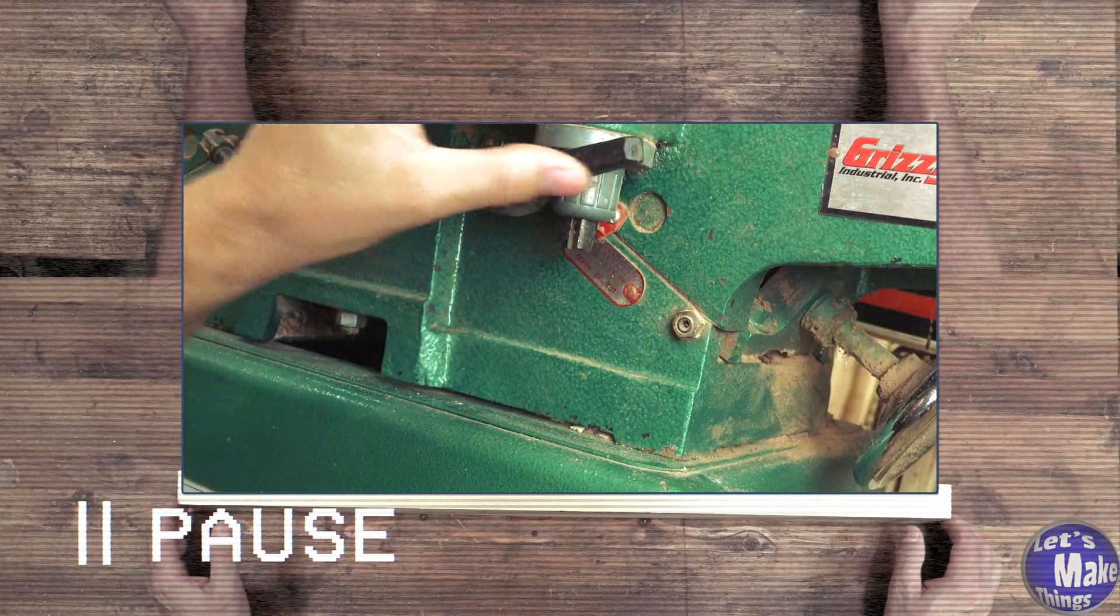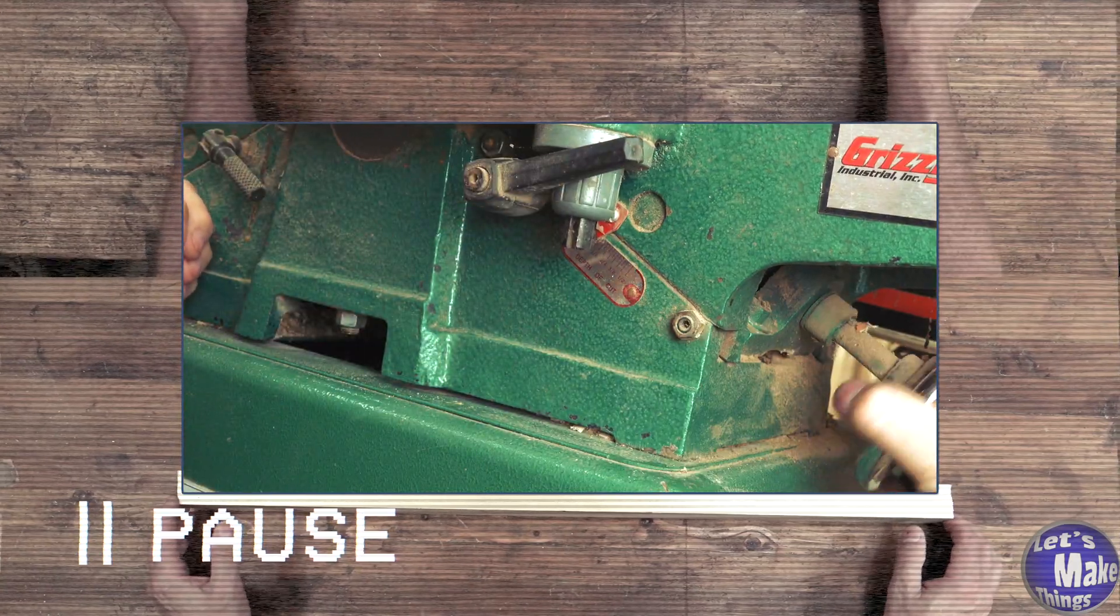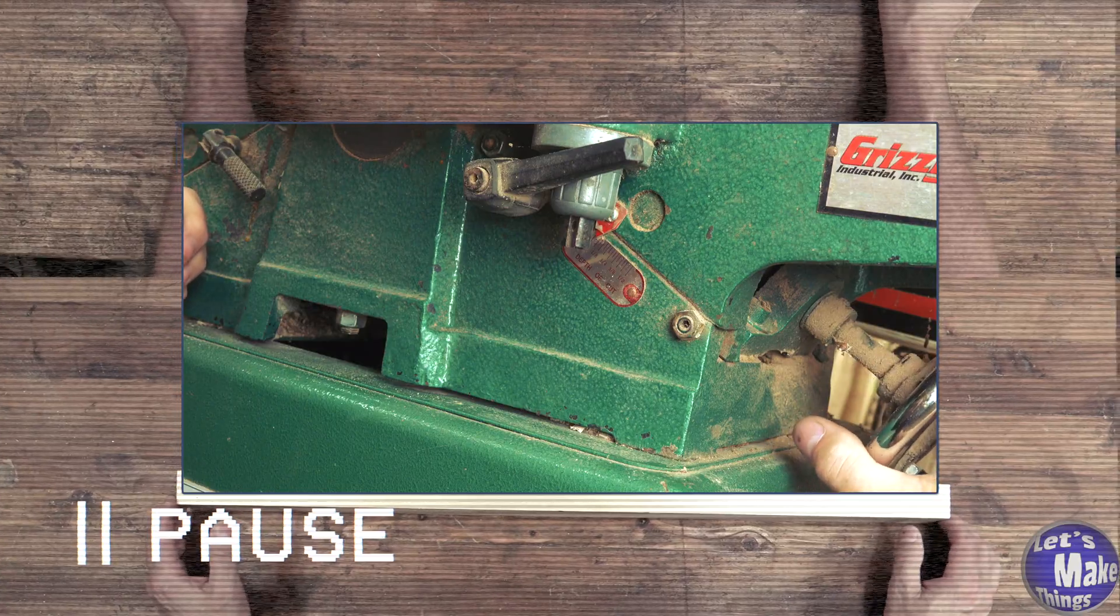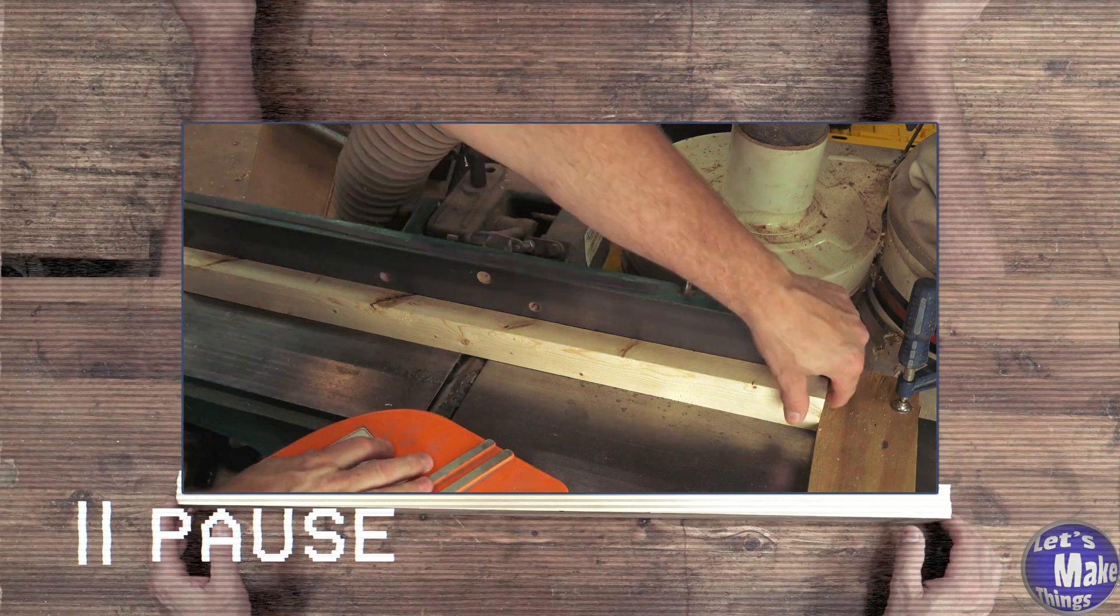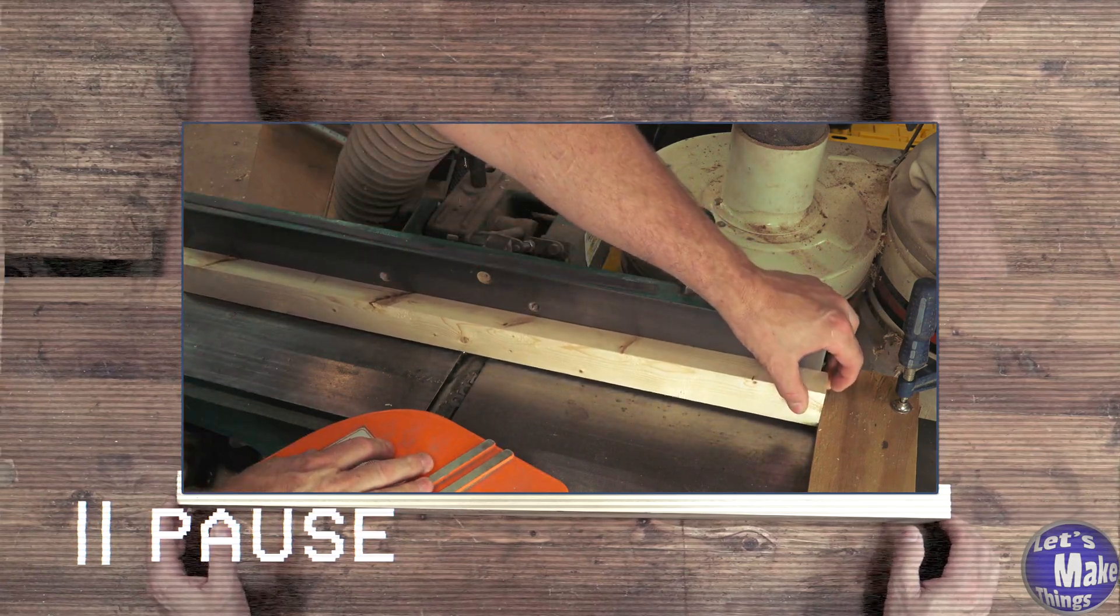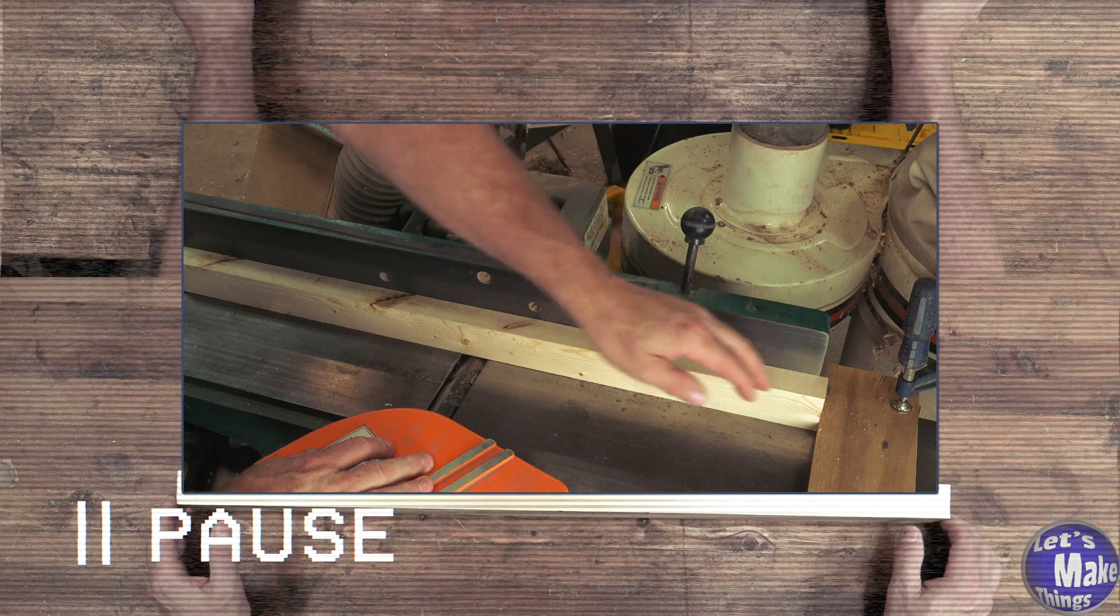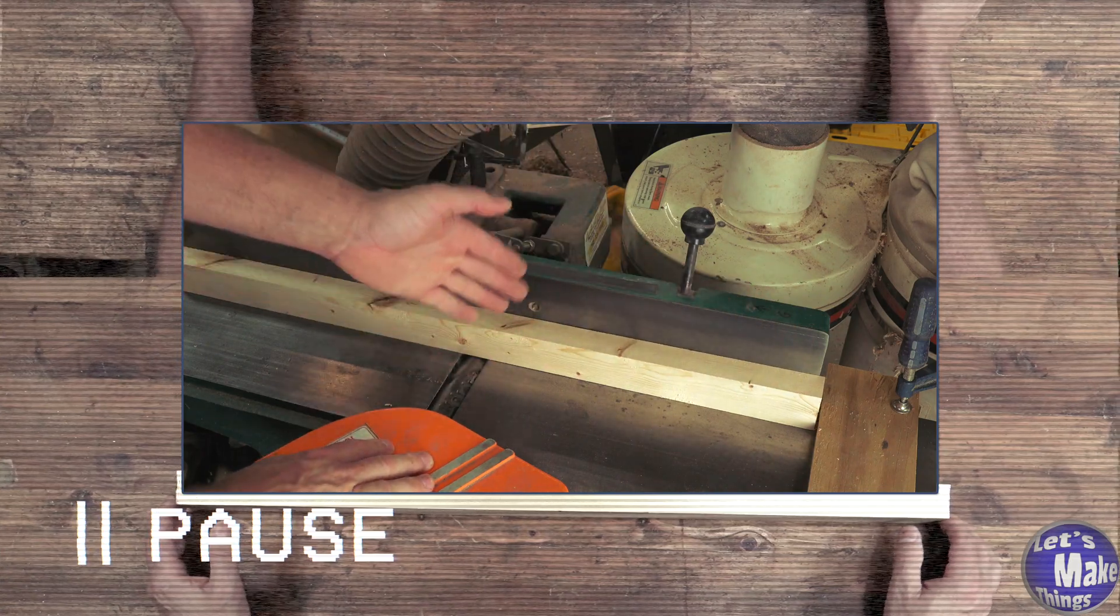I'll come down to my depth of cut. I'll release the lock, and I want to set it at a 32nd of an inch. So right there, and then I'll lock it again. Now I'm going to come in here, and I'm going to slowly drop this on the table, and then I'm going to push it all the way through to make my cut.